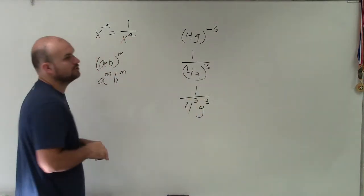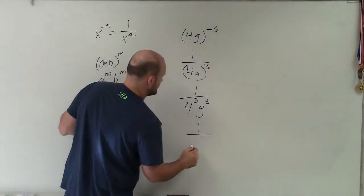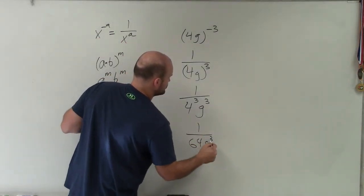Well, g cubed is going to be g cubed. 4 cubed is going to be 4 times 4 times 4, which I end up being 1 over 64 g cubed.